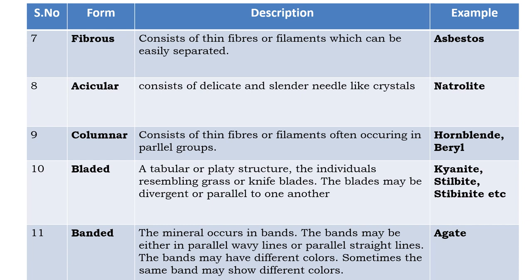Acicular form consists of delicate, slender needle-like crystals — example is natrolite. Columnar form: the fibers or filaments occur in parallel groups forming columns — examples are hornblende and beryl. Bladed form is a tabular or platy structure where individuals resemble a knife blade or grass blade; the blades may be parallel or divergent — examples are kyanite, stilbite, and stibnite.